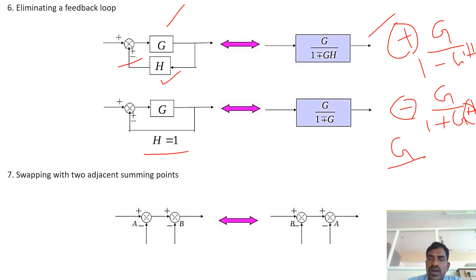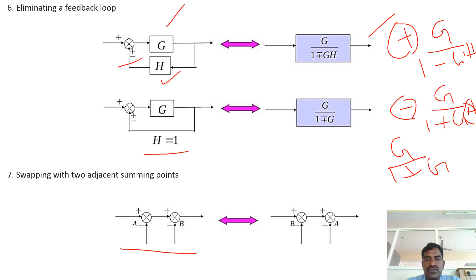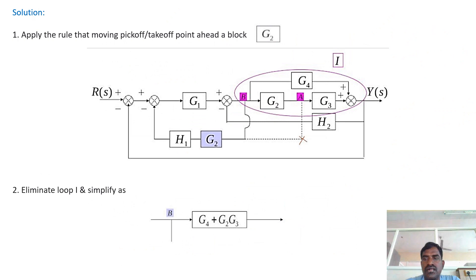Now swapping two adjacent summing points. We swap them for calculation purposes when required. When swapping the two summing points, there are no changes in the summing point values. Based on all these techniques, we solve the block diagram.